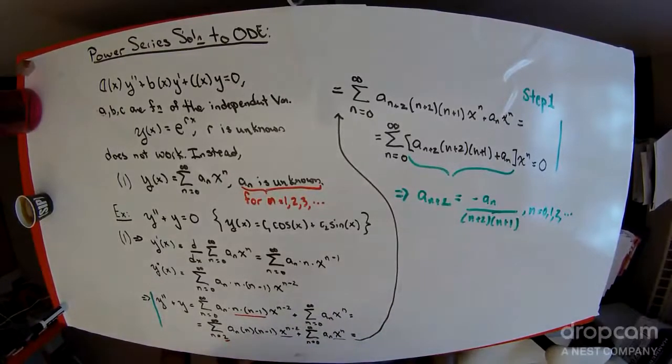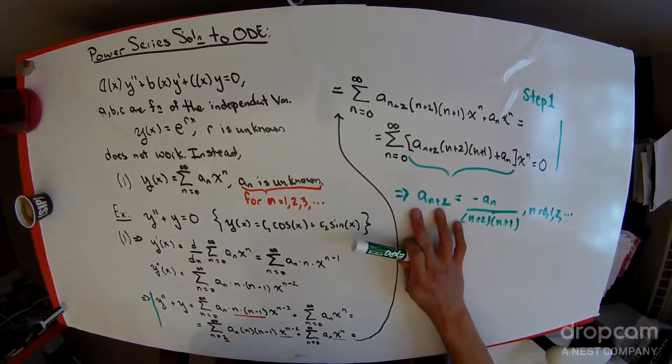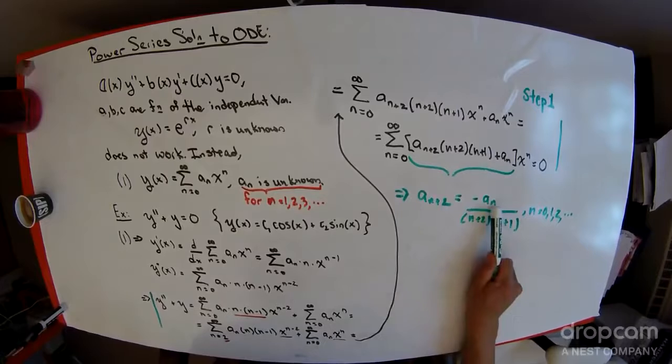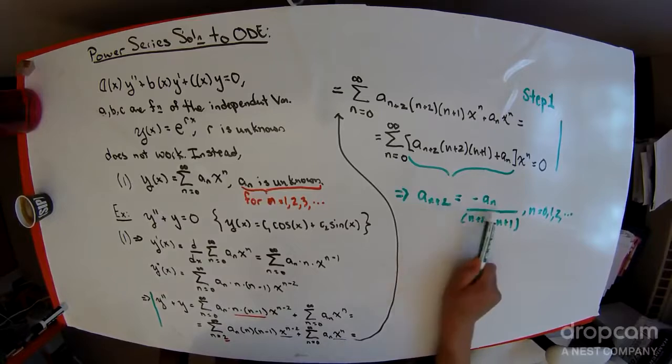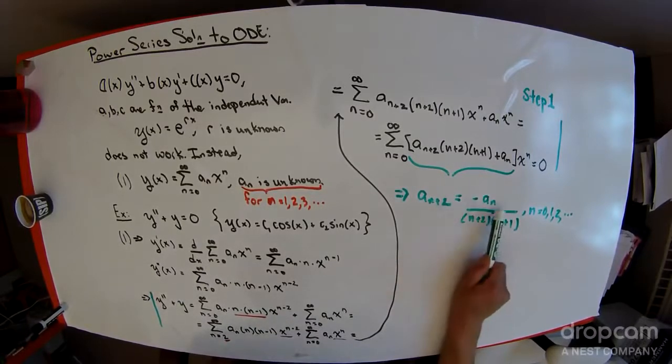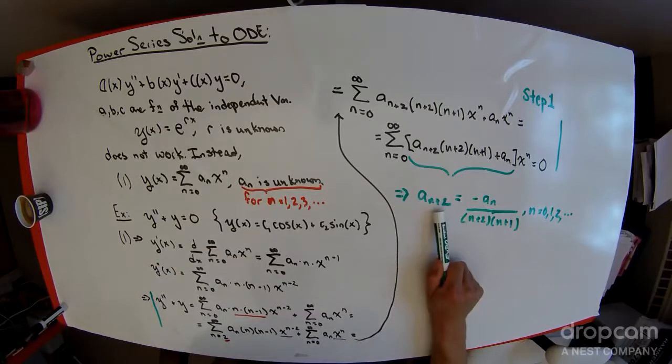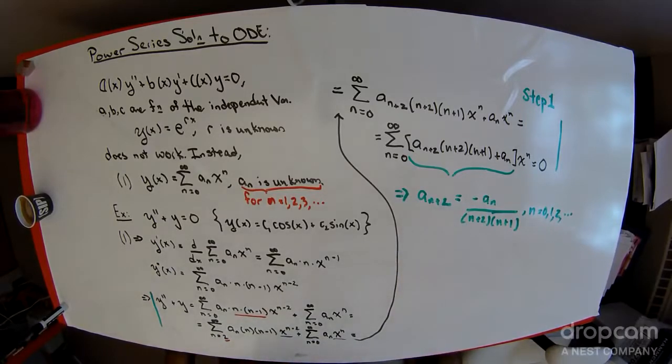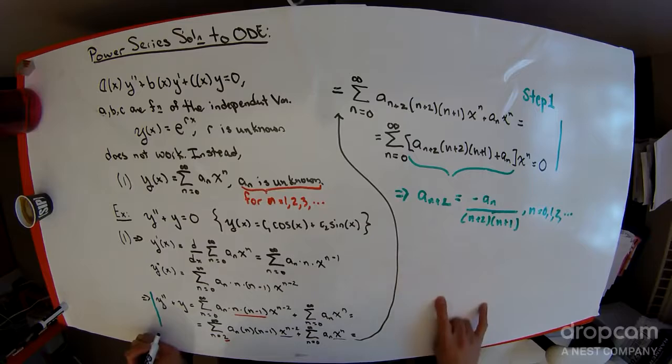For all the integers n and 10. This is called a recurrence relation. This recurrence relation is telling me the a sub n plus 2 coefficient in terms of the a sub n. So if I were to tell you n equals the zeroth coefficient, that would naturally tell me the second coefficient. The second coefficient would tell me the fourth, the fourth to the sixth, the sixth to the eighth, and all the evens. On the other hand, if I choose a sub 1, if I was given that, then I would know a sub 3, a sub 3 would tell me a sub 5, a sub 5 would tell me a sub 7, and I'd get all the odd coefficients. If step 1 concludes with the definition of this recurrence formula, the next step is to solve the recurrence formula.